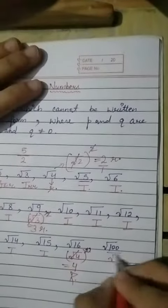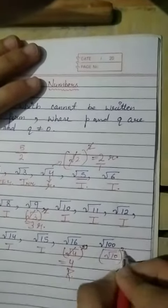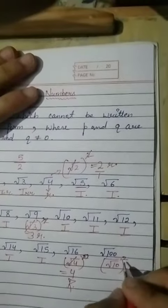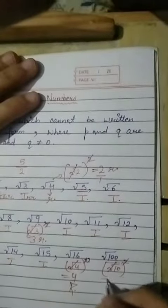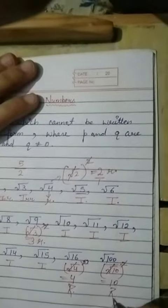Now, √100 we can square, √10 whole power square. Square cancels the root. So you get 10, so this is also a rational number.